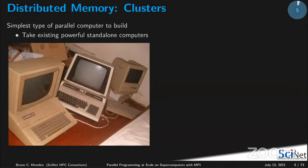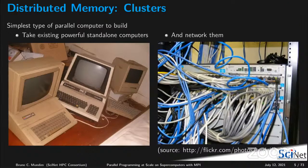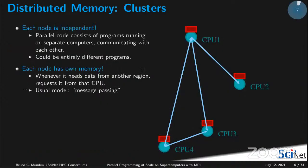What is so appealing about the cluster or supercomputer? It's a very simple type of parallel computer to build. You basically take some very powerful standalone computers and connect them together in an informal network. Each computer in this network is a node — we call them compute nodes because they are connected in a network forming a graph, where the cables are the edges. Each node is independent, and the parallel code consists of programs running on separate computers communicating with each other.